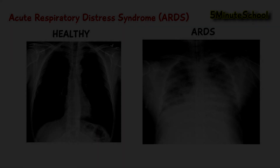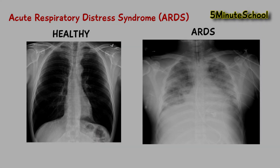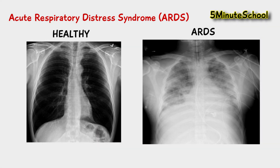Here is an x-ray showing healthy lungs and another x-ray showing someone with acute respiratory distress syndrome. You can see on the one who has the syndrome, on both sides of the lungs, we have whiteness — these white patches. It's quite a big appearance. This is known as bilateral opacification.